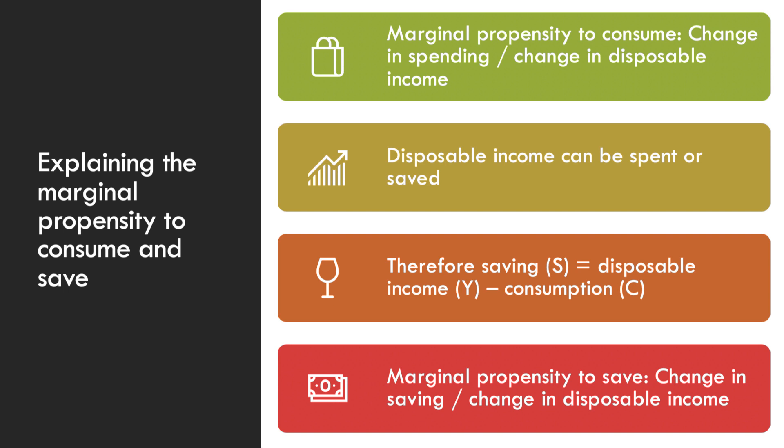Disposable income can be spent or saved, therefore saving (S) is disposable income (Y) minus consumption. The marginal propensity to save is simply the change in saving brought about by a change in disposable income.